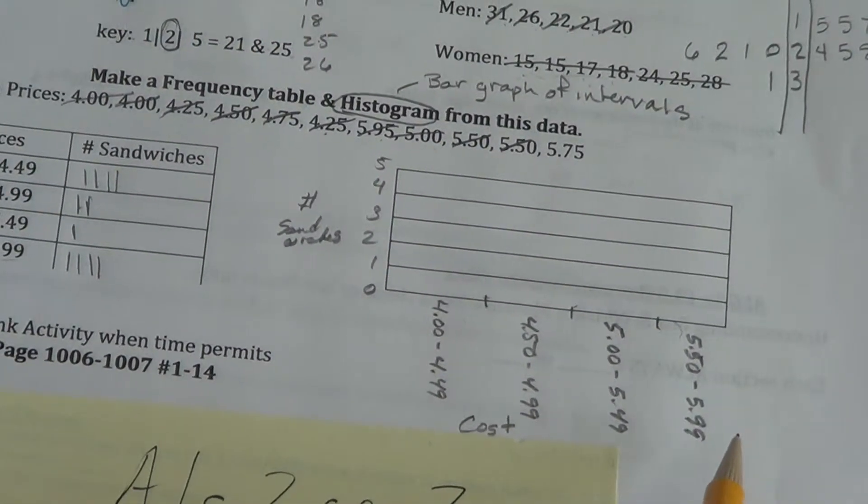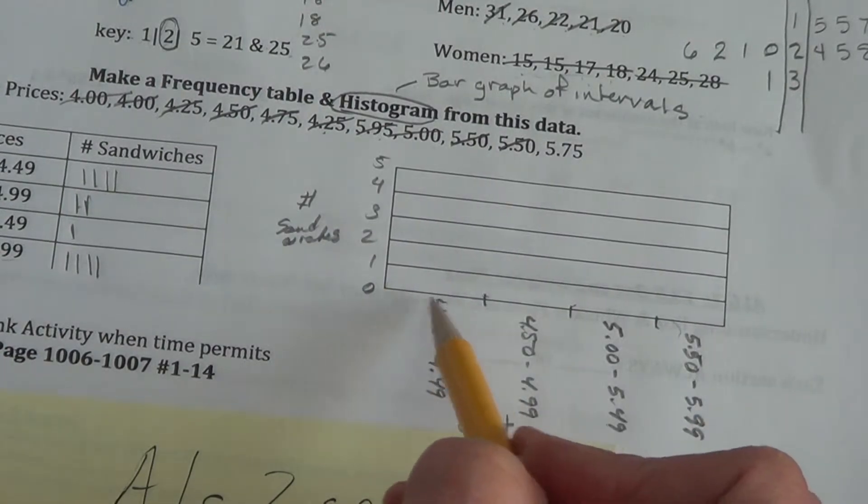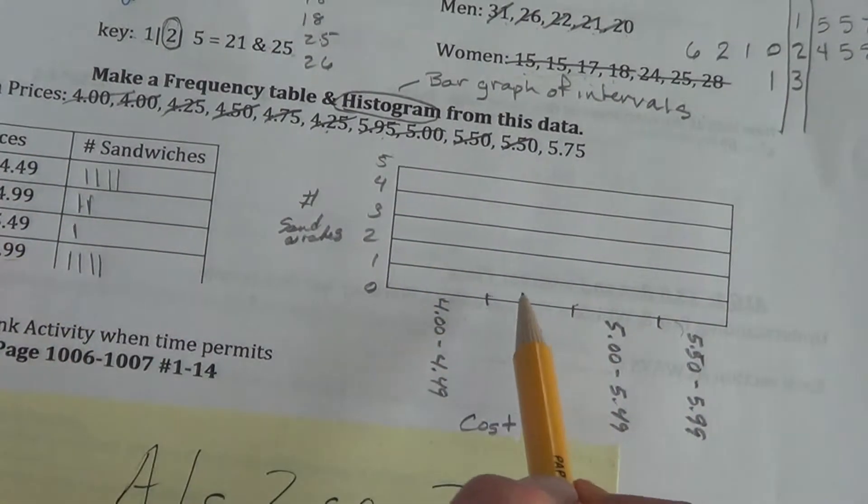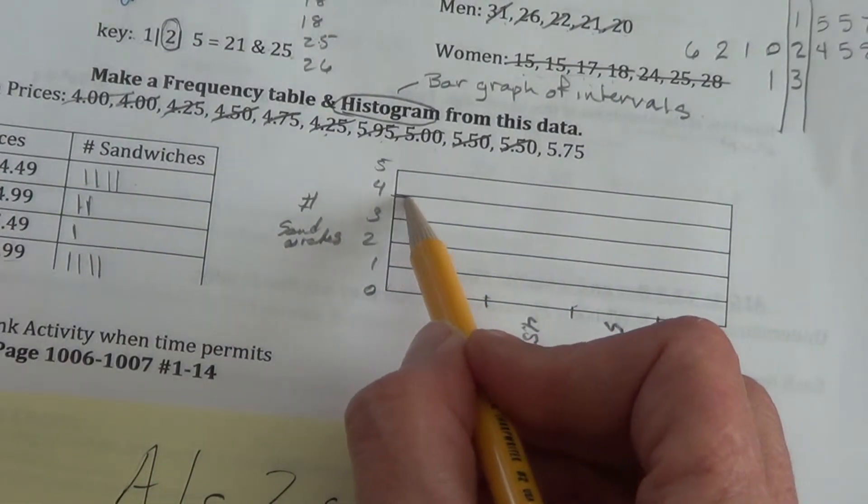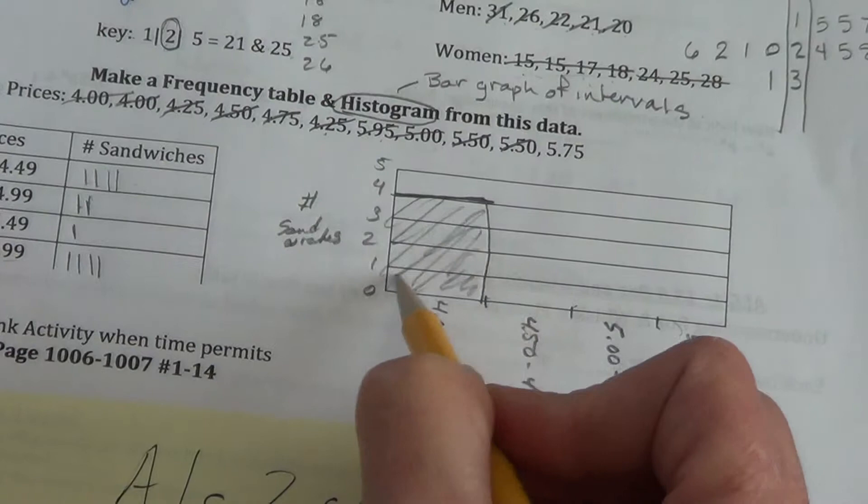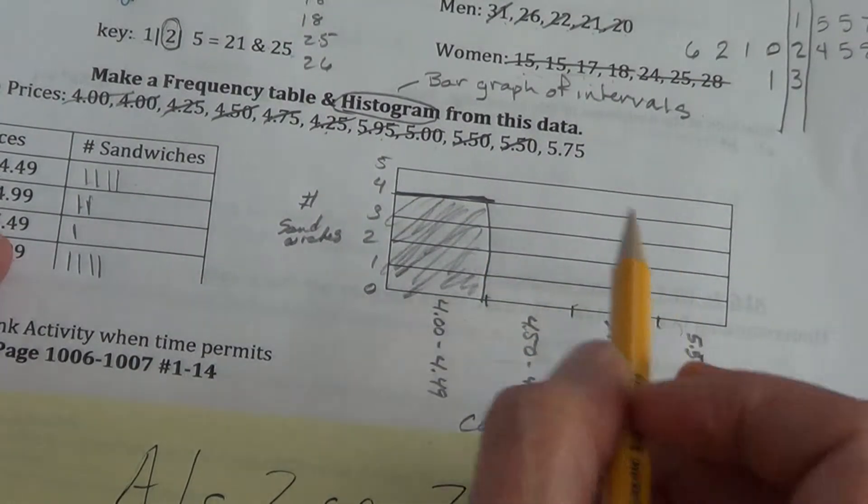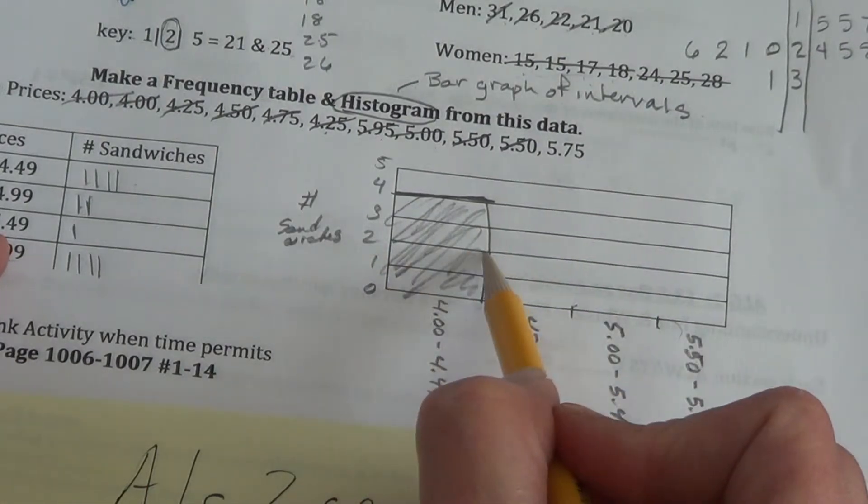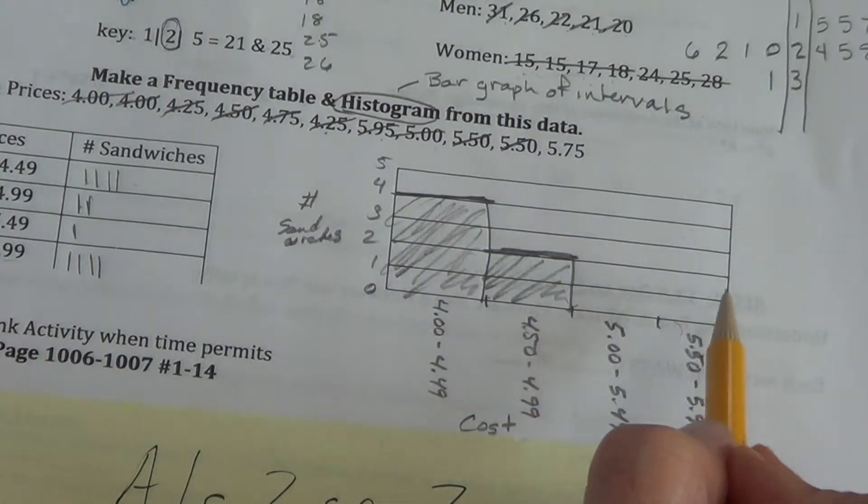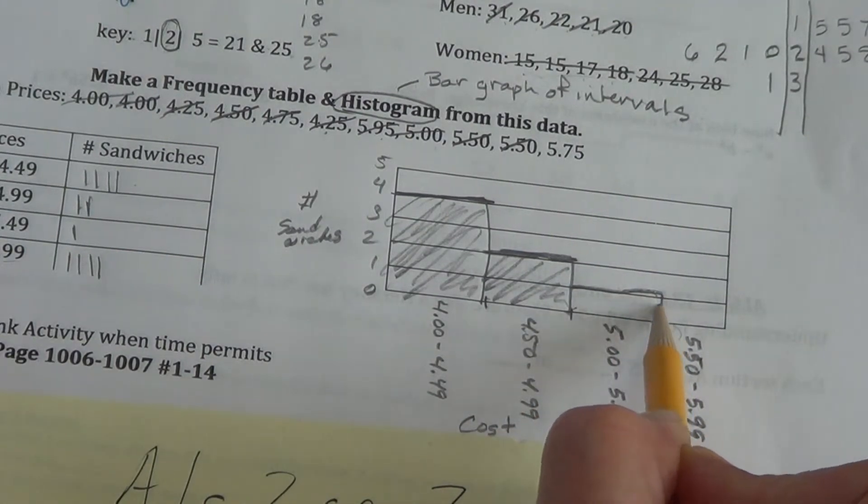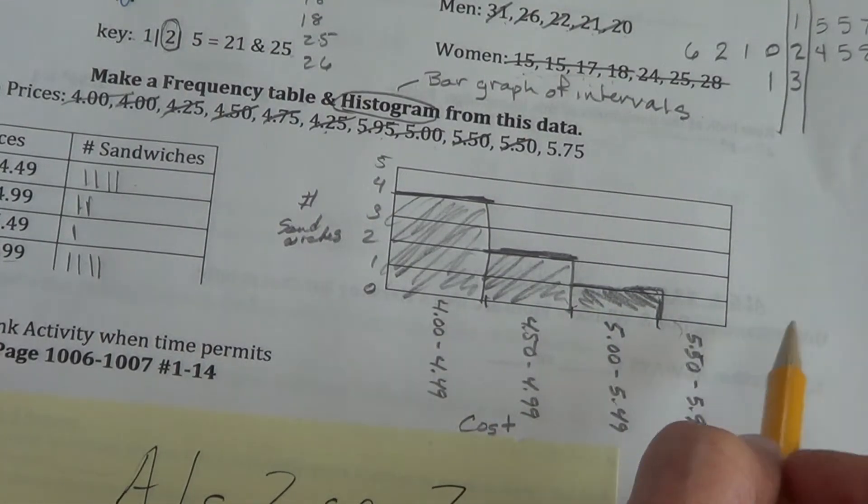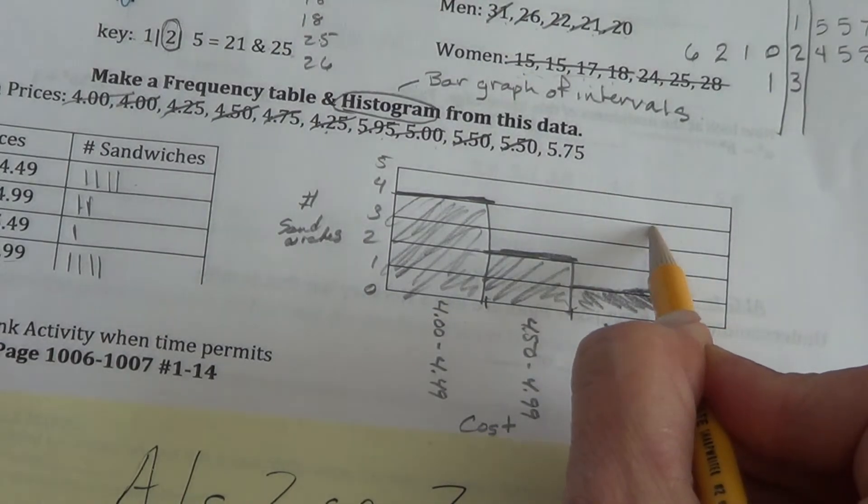So a couple things that you want to be aware of is on a histogram you don't need to put a break in there. The first interval is the first interval. Don't have to have a break on those. Now from $4.00 to $4.49 we had four sandwiches. So we'd come up to the four and fill in that entire column to show that there's four sandwiches. On the next column we only had two, so we'd come at two and draw a bar to that height. On $5.00 to $5.49 we only had one. And from $5.50 to $5.99 we had four again, so we'd come back up on that one.